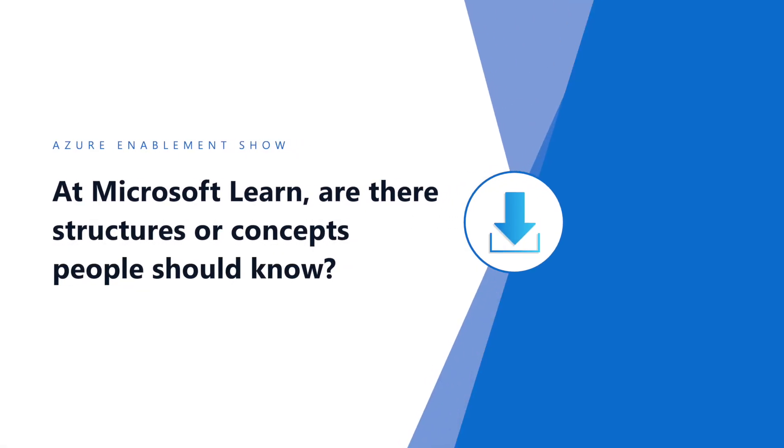At Microsoft Learn, the platform is structured into modules that are about 25 to 50 minutes of training. Each module is designed to be standalone, so you can jump into any topic at any level. We also have curated learning paths that give you a logical order to take the modules, connecting skills together to help you gain a deeper level of expertise and knowledge. You earn achievements and badges as you complete modules and learning paths, and you can create collections of content and share your list with friends and coworkers.